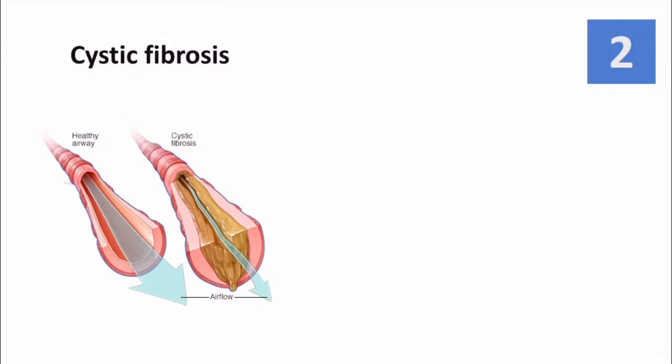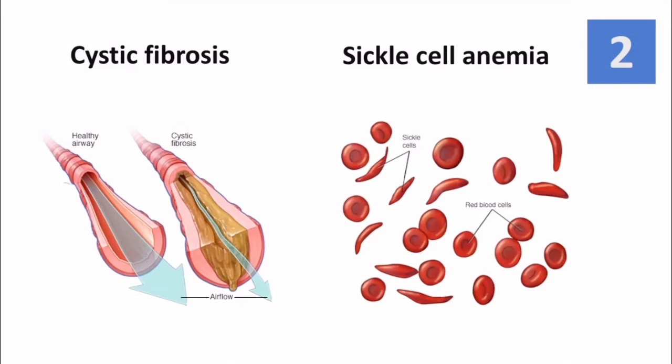Cystic fibrosis is a good example of such autosomal recessive disorder. Here, the mucus becomes thick and sticky, obstructing the airway. Another example is sickle cell anemia. In this case, sickle-shaped RBCs are produced and they have less capacity of carrying oxygen. Please note, consanguineous marriage leads to such disorder in the next generation.